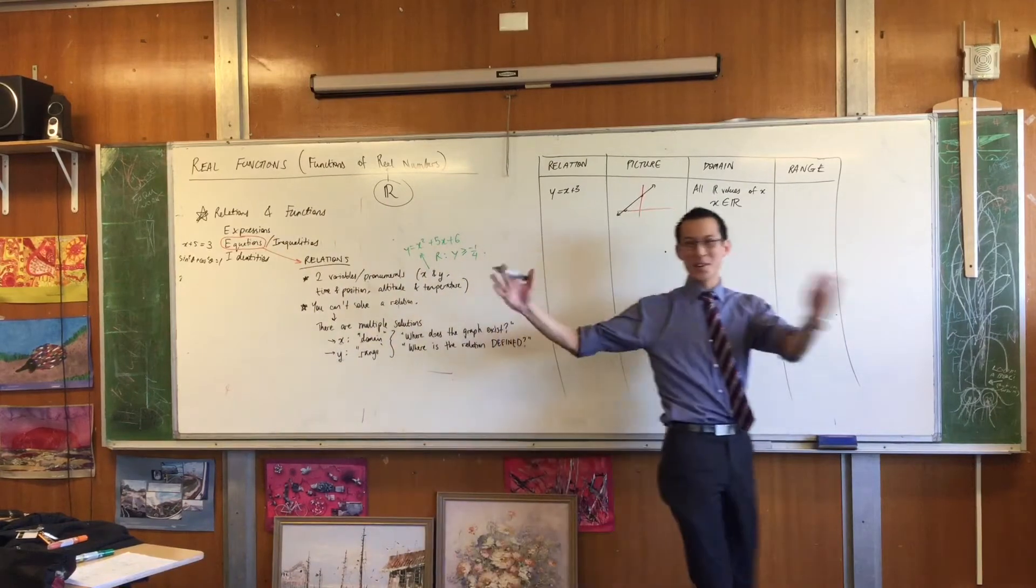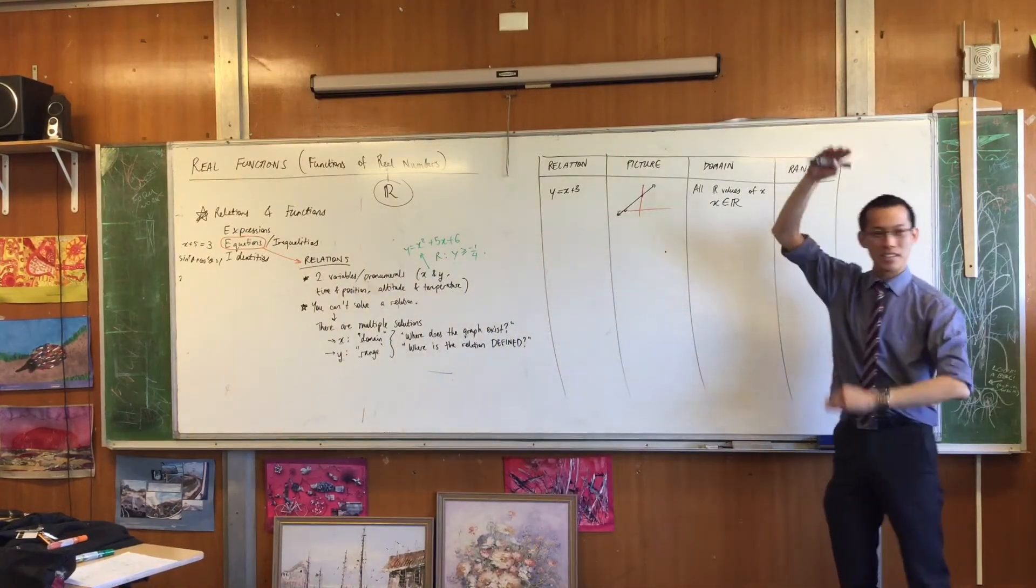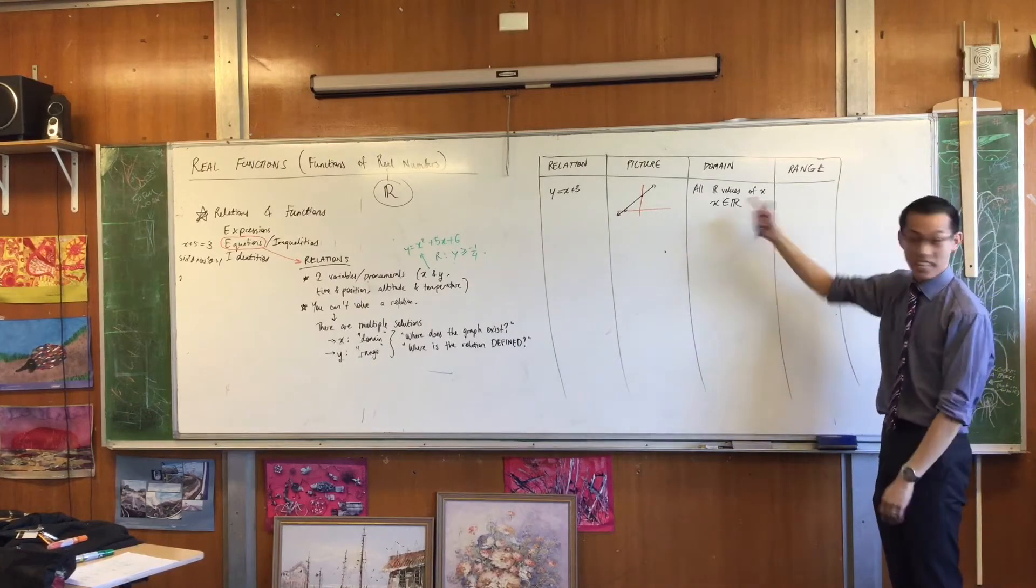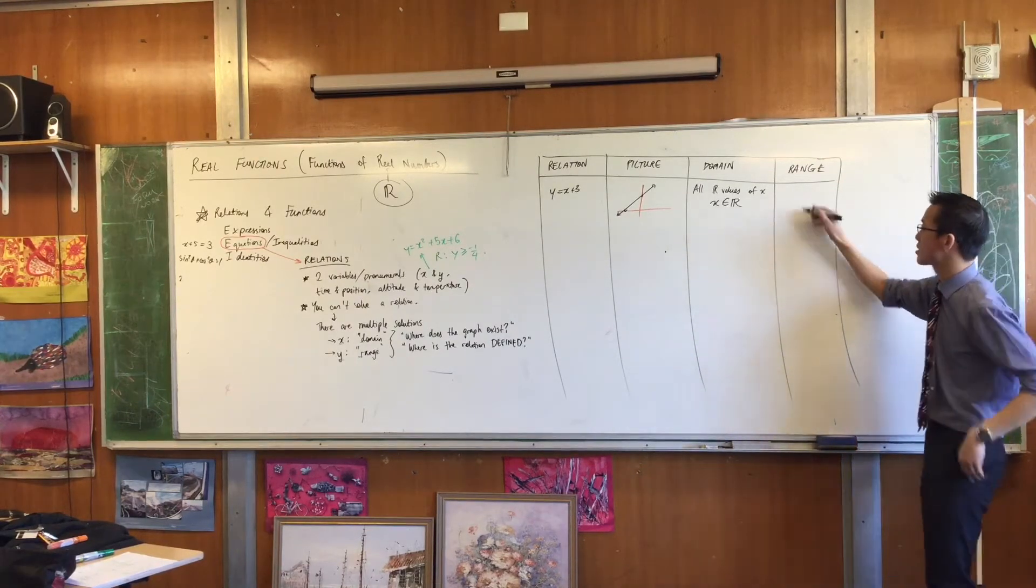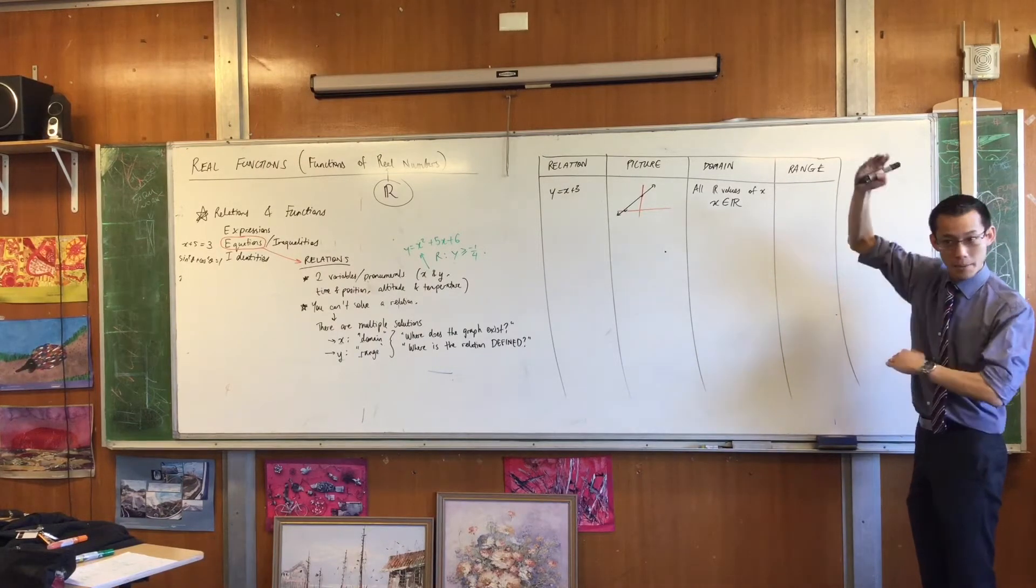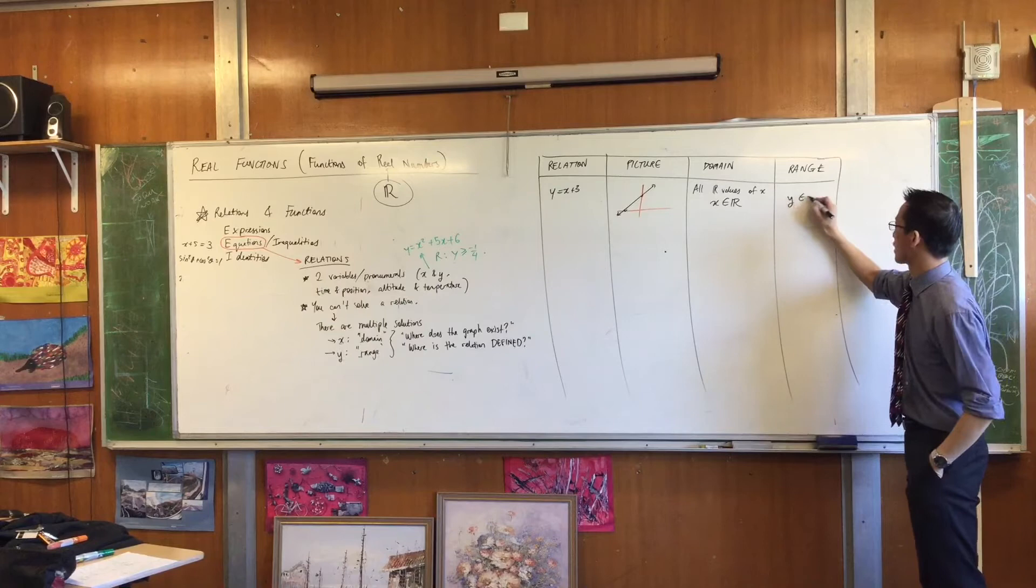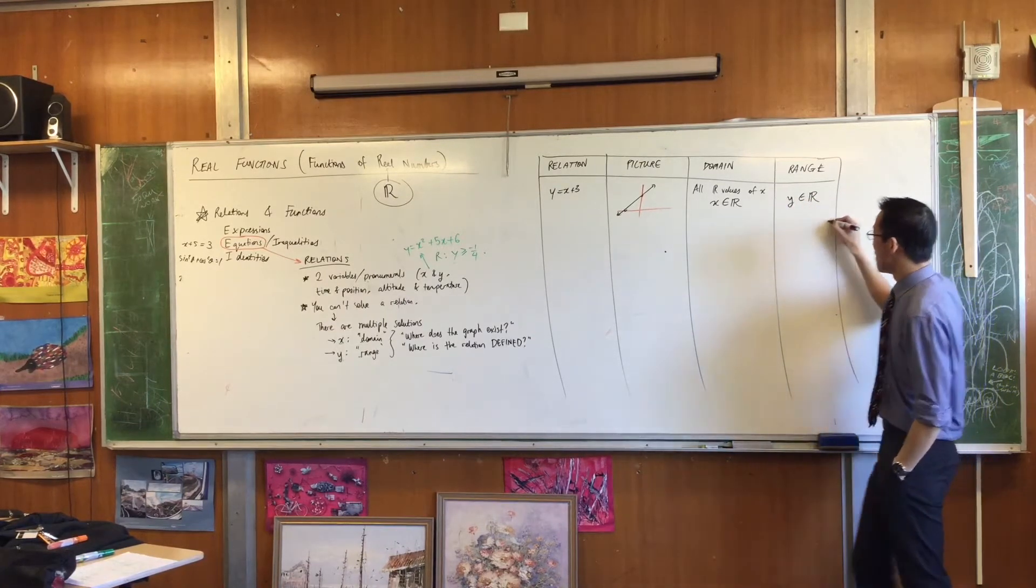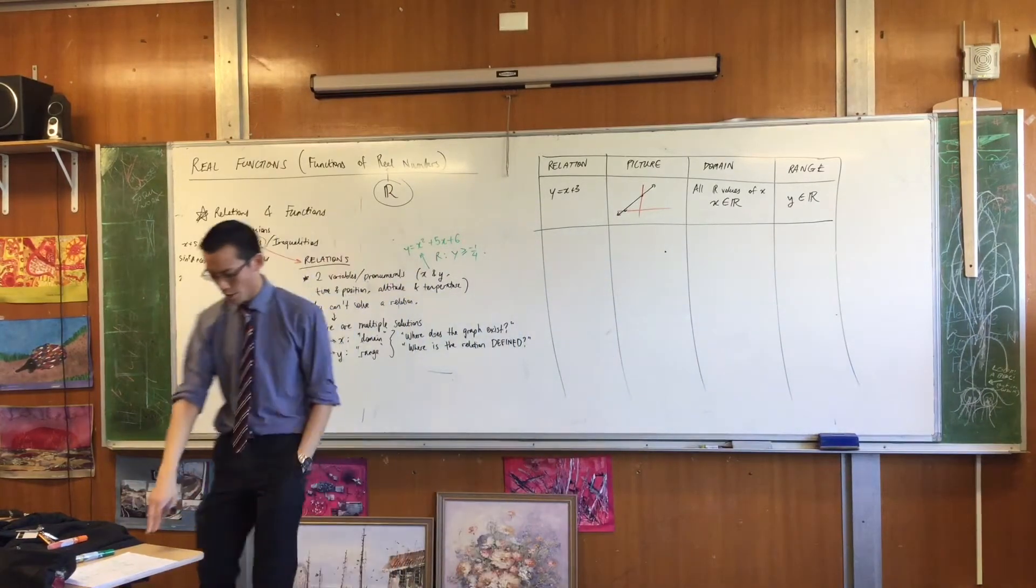That was domain, so we're looking horizontally. What about vertically? Where does the graph exist? Up and down. It keeps going just like it does for the x value. So in this case, I could say all real values of y, because it's about up and down. But I'm going to be cheap like a mathematician, and I'm just going to say that. So that's a really simple relation. Let's have a look at another one.